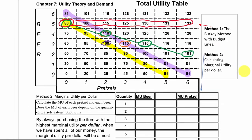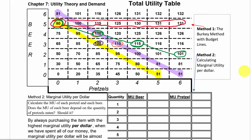Using method number two, what we're going to do is calculate the marginal utility per dollar of each good. The first thing we have to do is calculate the marginal utility of each additional pretzel and each additional beer separately. That's what we're going to do in this table down here.